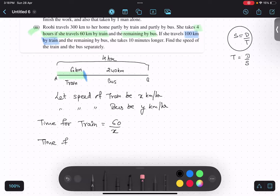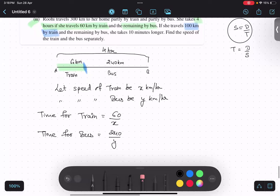Now time for bus: 240 upon y. And this is both the cases are in hours because we are considering speed in kilometer per hour. Therefore according to the question, 60 upon x plus 240 upon y equals to 4. Is this thing clear? Yes.